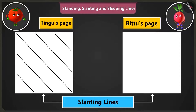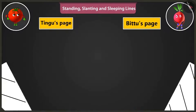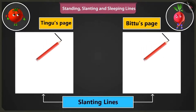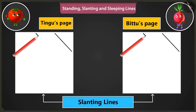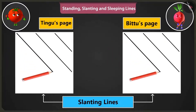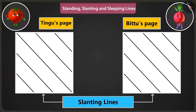See. Okay, I'll make it. Very good. Now slanting lines have to be drawn from the right side top to bottom just like this. See. Wow, look at my slanting lines.